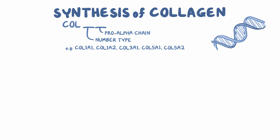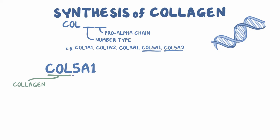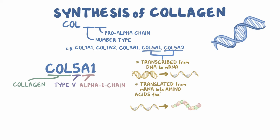Let's take the genes COL5A1 and COL5A2 that encode for type 5 collagen as an example. In COL5A1, COL stands for collagen, the 5 stands for type 5 collagen, and the A1 refers to an alpha 1 chain. So COL5A1 encodes a collagen type 5 alpha 1 chain. To synthesize type 5 collagen, for example, COL5A1 and COL5A2 get transcribed from DNA to mRNA, and then get translated from mRNA to a string of amino acids that make up a protein.